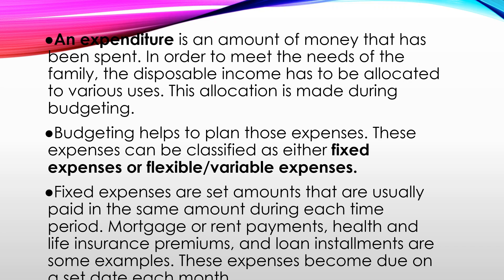An expenditure is an amount of money that has been spent in order to meet the needs of the family. The disposable income has to be allocated to various uses, and this allocation is made during budgeting. You'll know from experience roughly how much the light bill may come to — it's not fixed, but you know the typical range. Over time you have an idea, and you are basically allocating the income the family has towards these expenses in order to meet them.